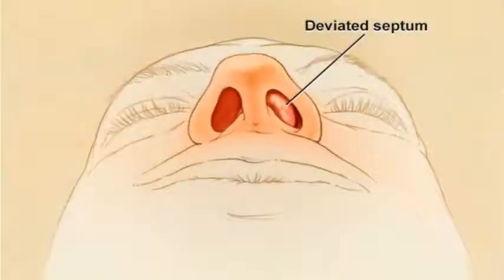The septum is the structure that splits the middle of the nose and divides it into the right and left sides. Sometimes due to trauma, vigorous activity, or simply genetics — the family nose — that nasal septum is deviated or twisted to one side or the other.